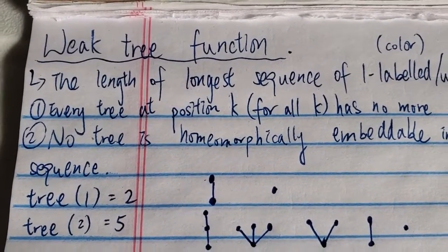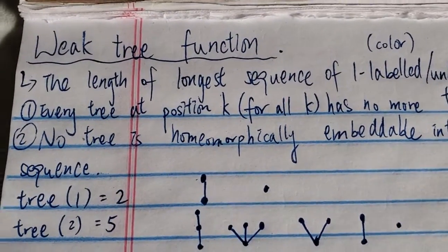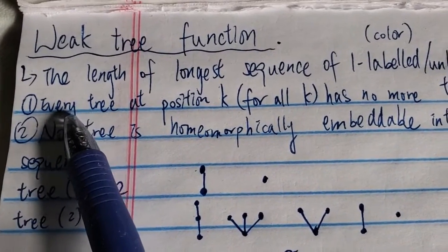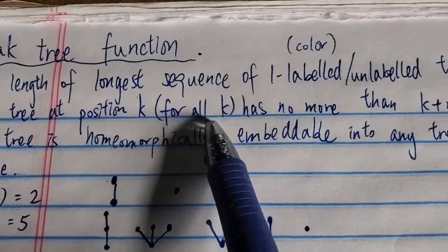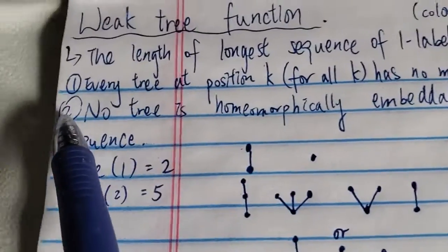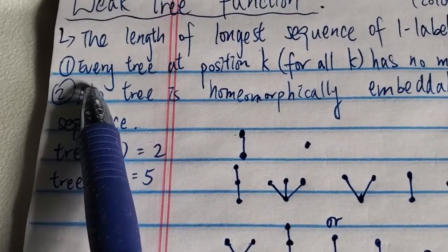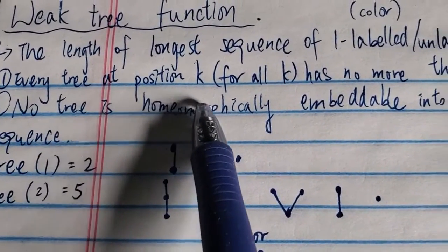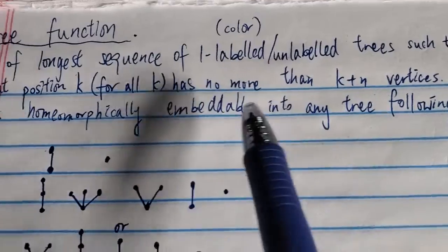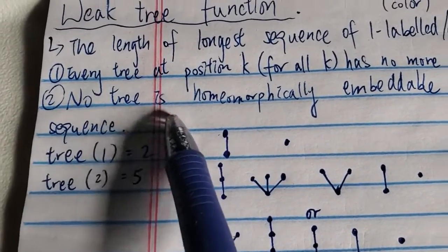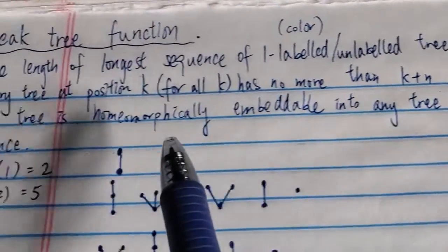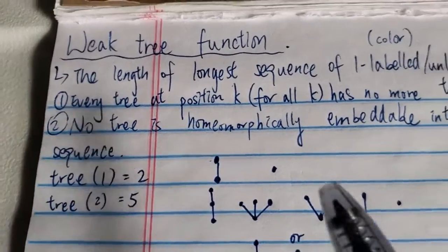So what is the weak tree function? Of course, it's related to the regular strong tree, but it's not the same. The definition is that it is defined as the length of the longest sequence of one-labeled or unlabeled trees such that there are two rules. The first: every tree at position k has no more than k plus n vertices. The second rule is that no tree is homeomorphically embeddable into any tree following it in the sequence. So only two rules.